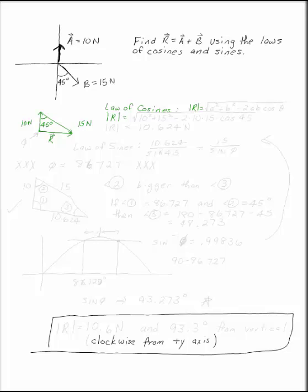Find the resultant of A and B using the law of sines and cosines. The first thing you want to do is put A and B head to tail.